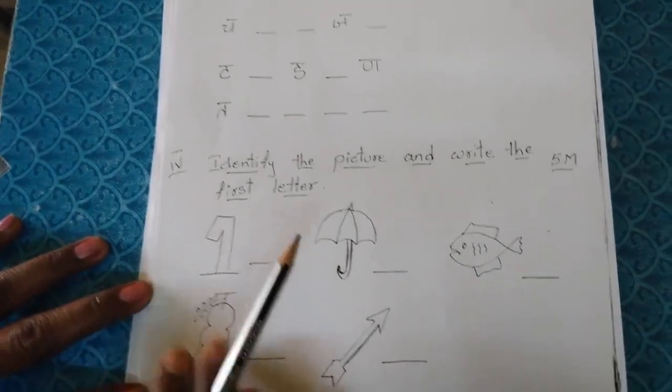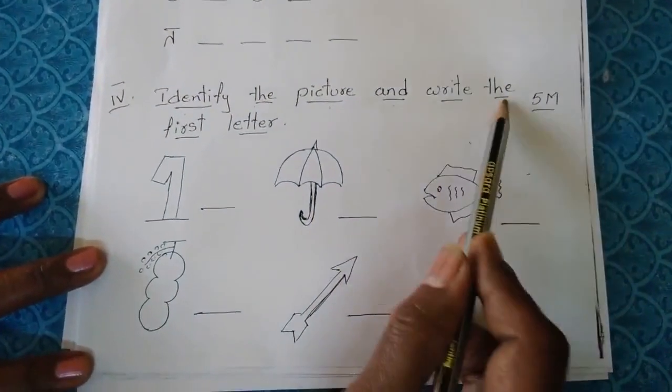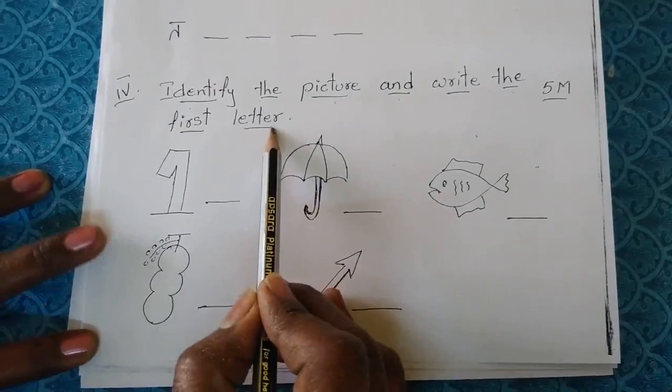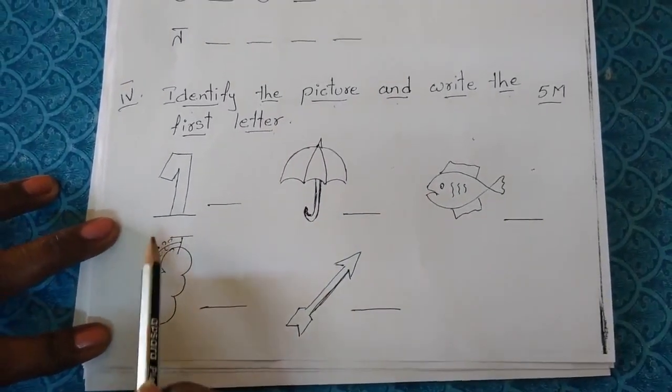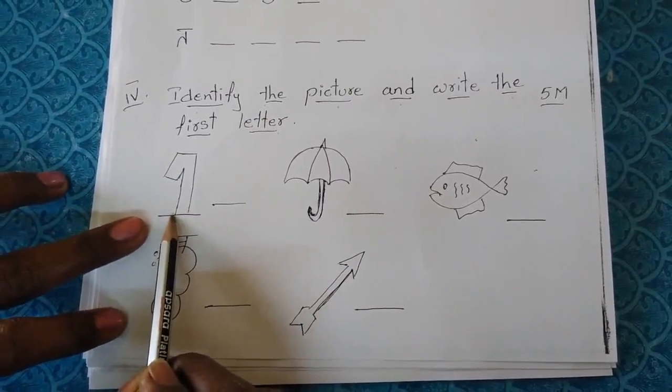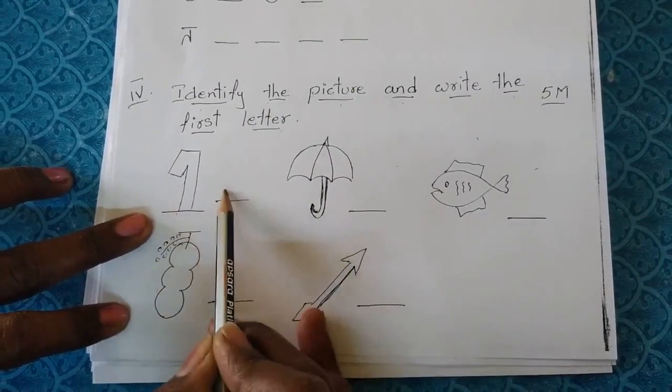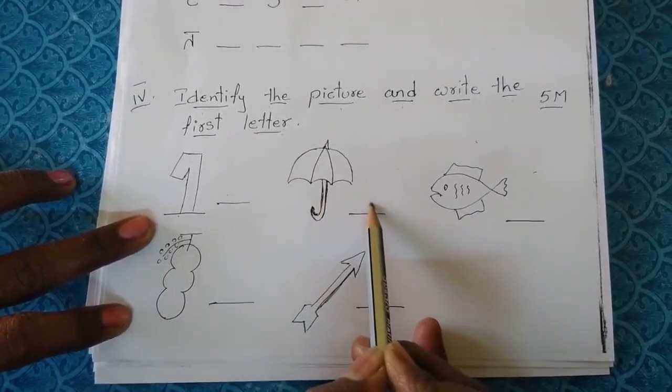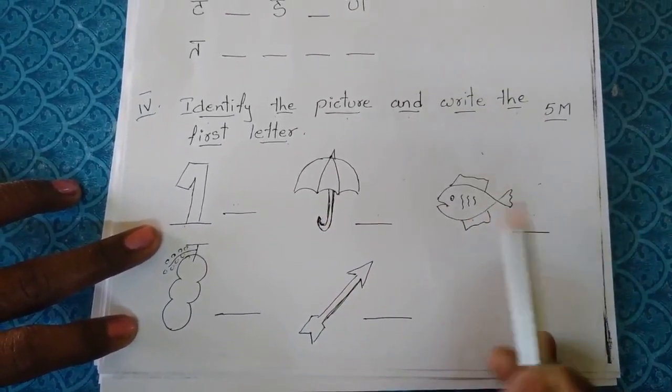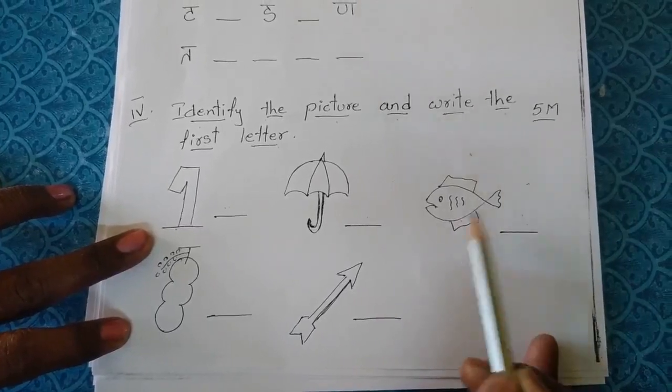Now next one is identify the picture and write the first letter. Here some pictures are there now. First you have to identify them. This is A, E, E, E. So you have to write here. E, Jha, Se, Chh, Tri, Ma, Se, Jha, Se, Jha, Sh. Like that you have to write.